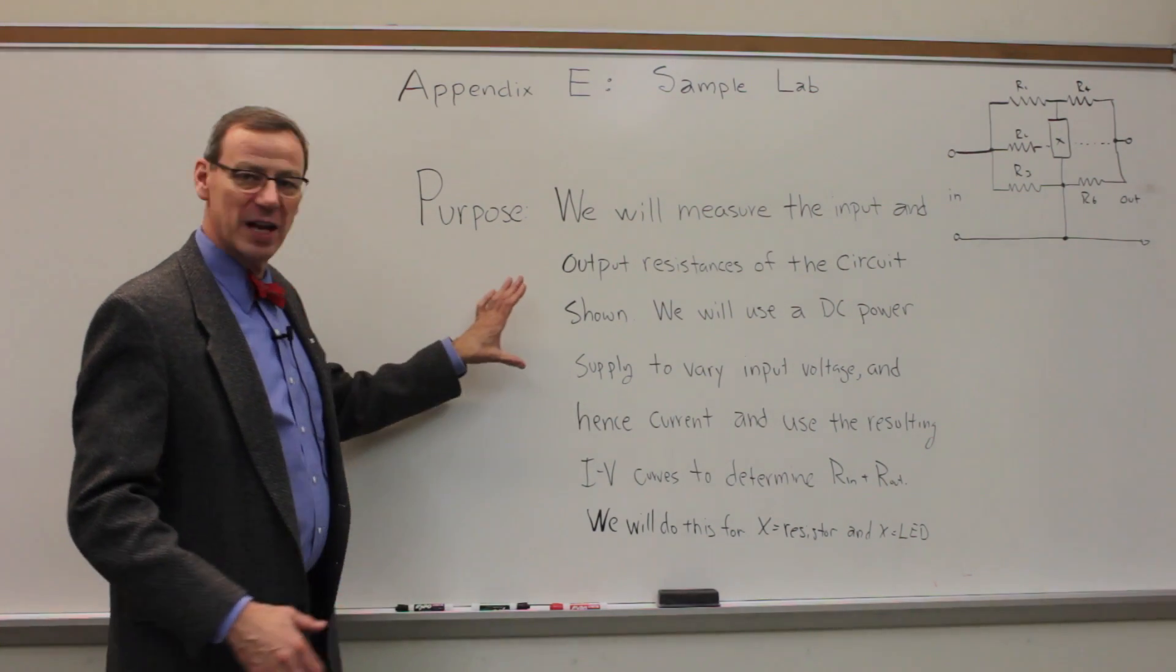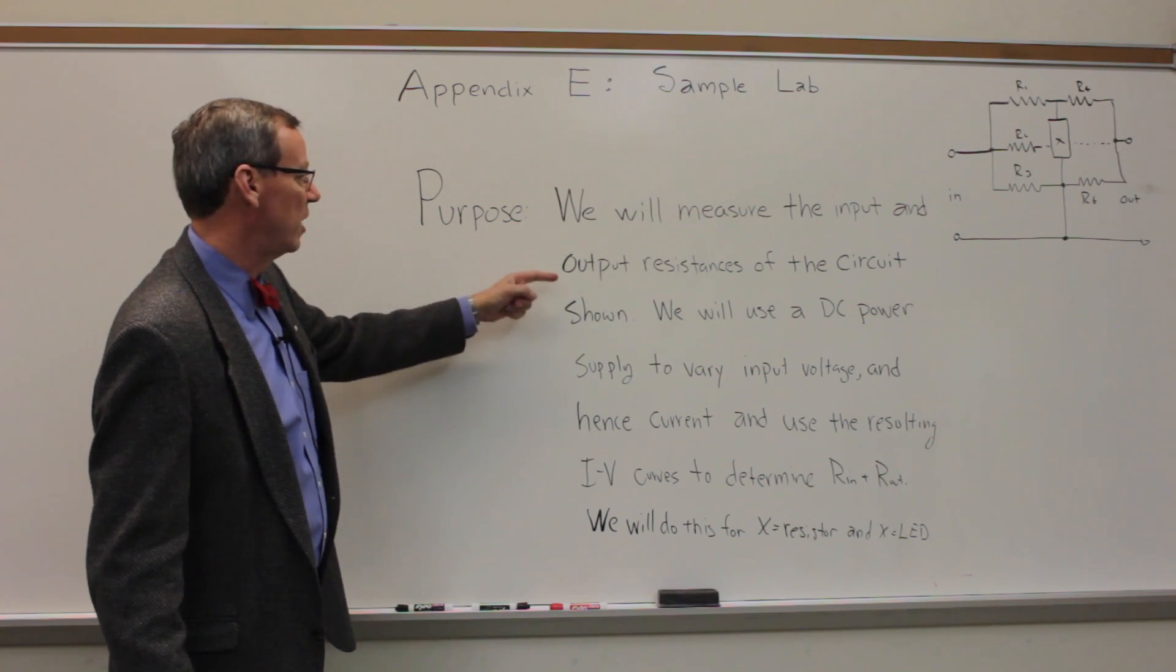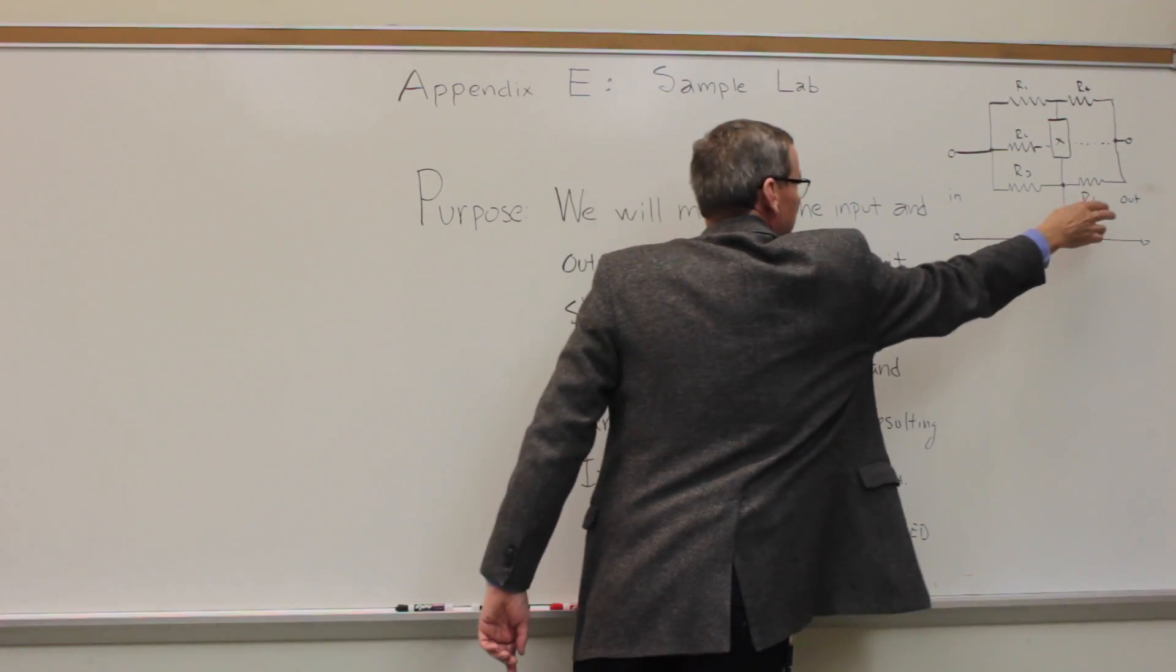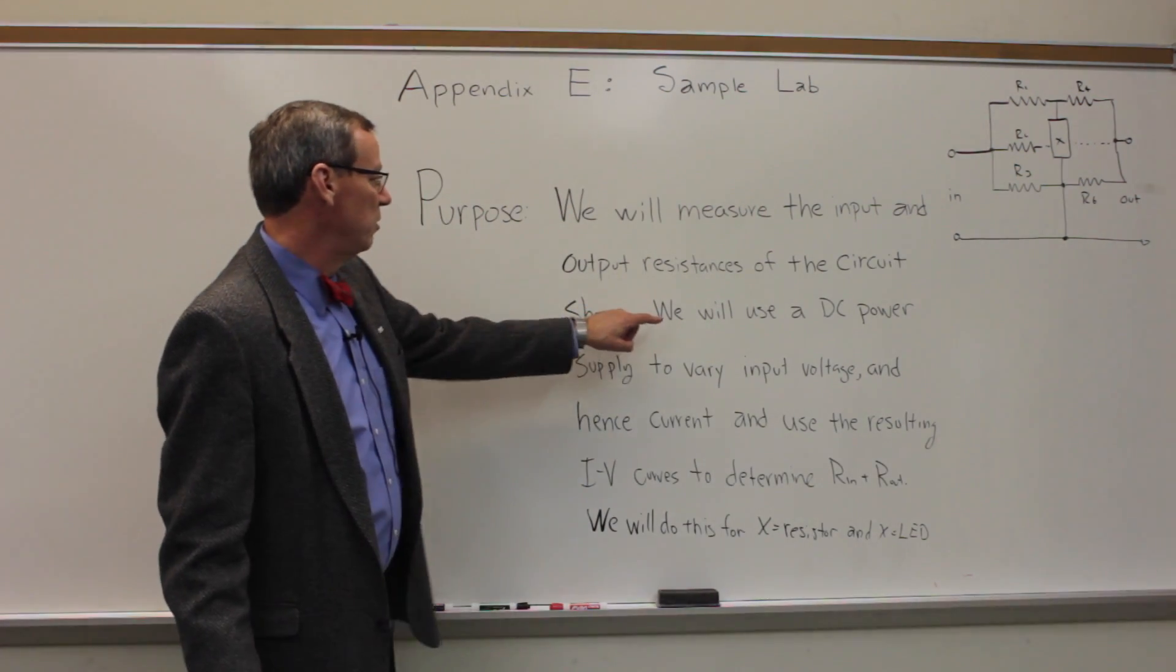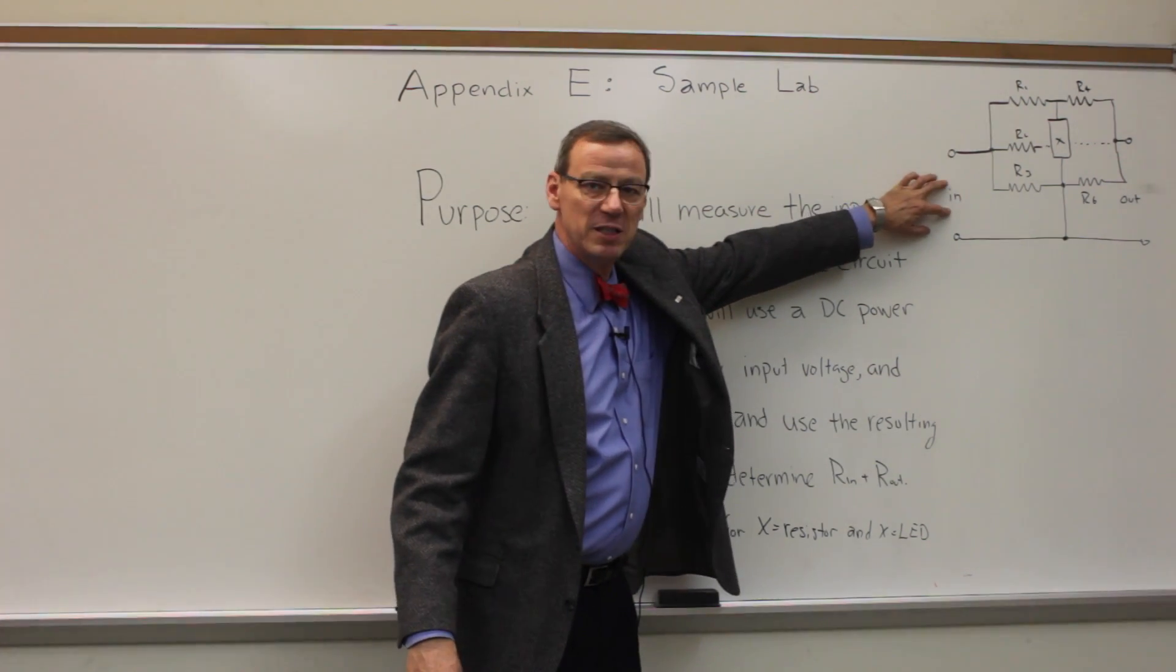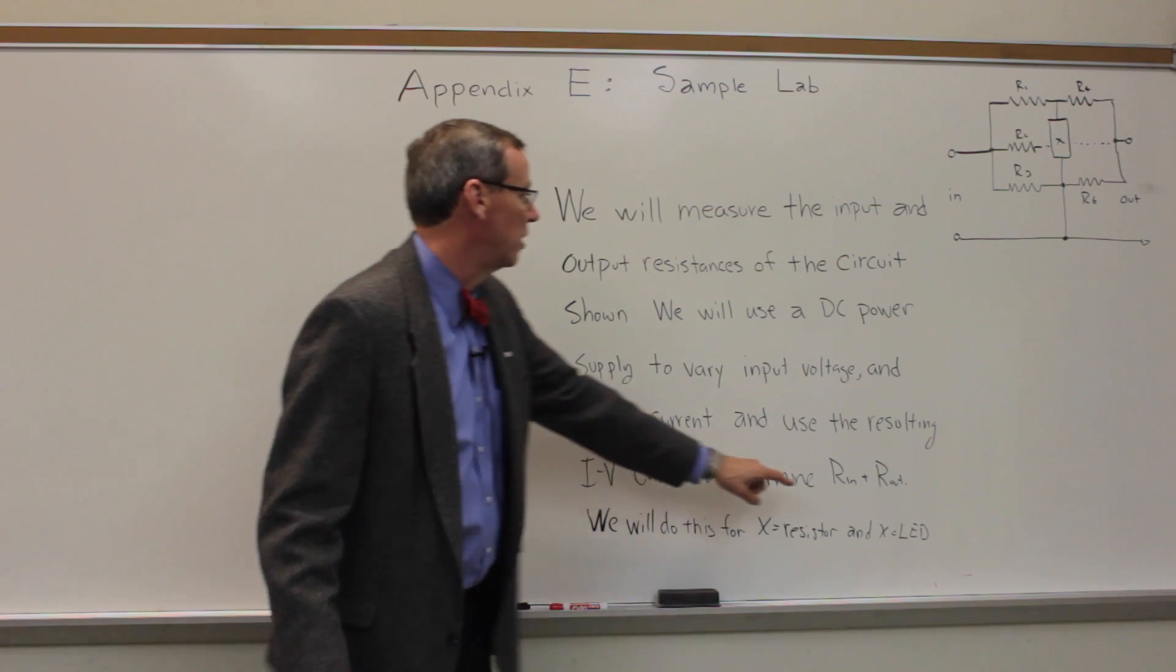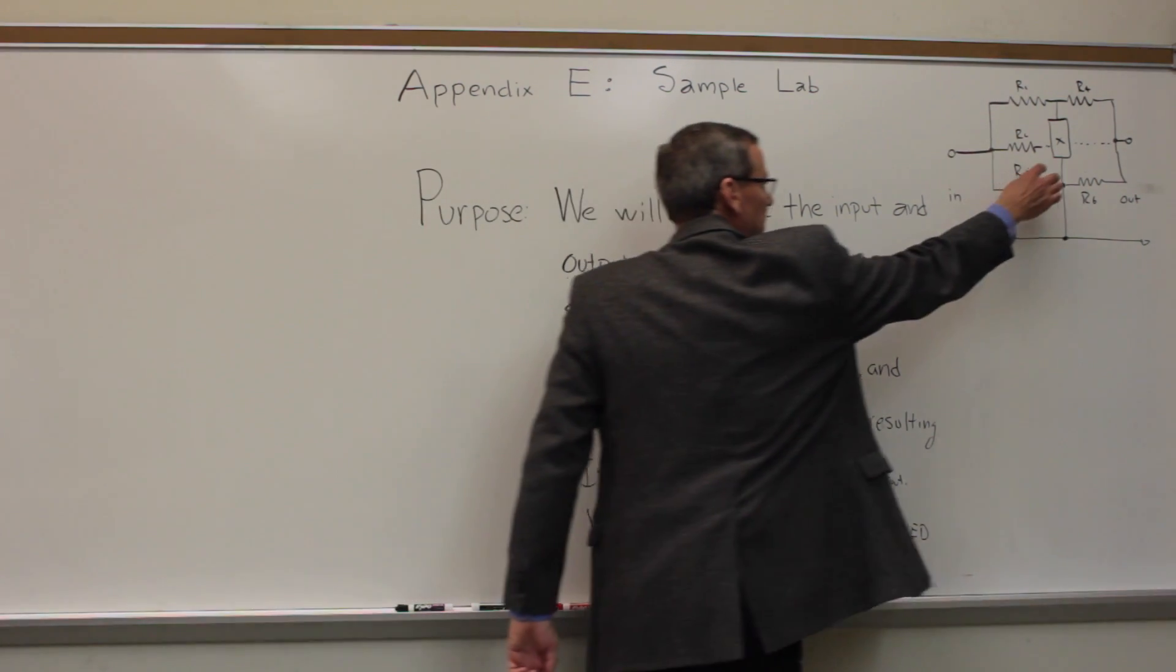So what I have here is a better purpose. It's not exactly the same one that's in the lab book, but it pretty much says the same thing. It says we're going to measure the input and output resistance of the circuit shown. So we've drawn the circuit over here. It's got an input and an output and there's some resistors and there's some component X in there and we will use a DC power supply to vary the input voltage. So we're going to hook some DC supply here, vary input voltage and hence we're going to vary the current.